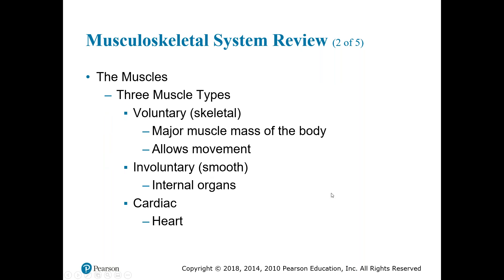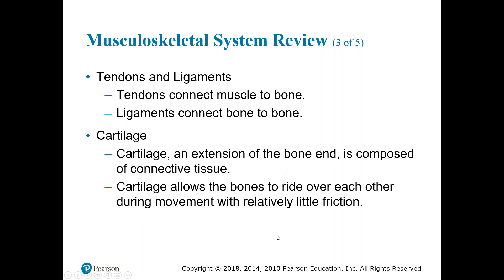Our muscles: we have three different types. We have voluntary muscles, which are our skeletal muscles — that allows movement and represents the major muscle mass of the body. We have involuntary or smooth muscles, which are our internal organs such as our stomach, intestines, and lungs. Very similar are our cardiac muscles. We also have tendons, which always connect muscle to bone, and ligaments, which connect bone to bone. Then we have cartilage, which is an extension of the bone — oftentimes non-porous tissue in comparison to the very porous tissue that is our bones.